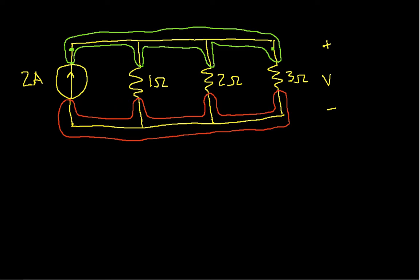The first current that flows through the 1-ohm resistor is I1. The second current that flows through the 2-ohm resistor is I2. And the current that flows through the 3-ohm resistor is I3.